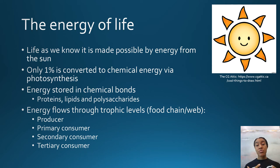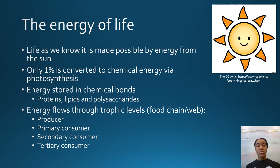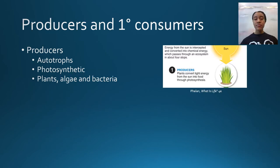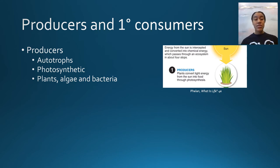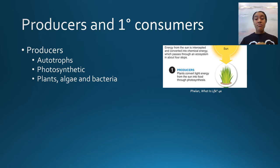Energy flows through trophic levels, starting with the producers — those that undergo photosynthesis: plants, base bacteria, and algae. It then flows from the producers to the primary consumers, secondary consumers, and tertiary consumers. At the base of this ladder are producers, which are autotrophic — they make their own food via the process of photosynthesis. They use photosynthesis to turn energy from the sun into chemical energy in the form of macromolecules.